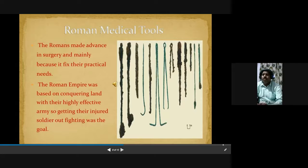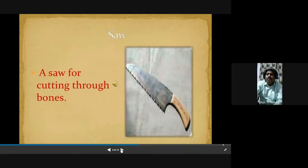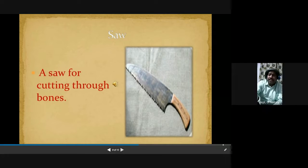Whenever they participated in wars or battles, soldiers may be injured and could lose certain body parts like a hand or leg. At that time, physicians and surgeons followed a form of surgery using certain tools to address those injuries. One of the tools you are watching on the screen is a saw, which was used for cutting bones or other parts of the body whenever soldiers were injured, and sometimes used as part of surgery.